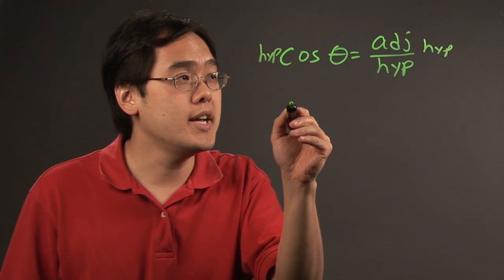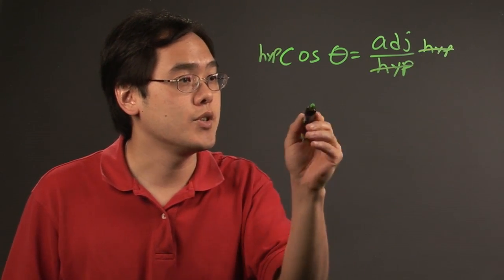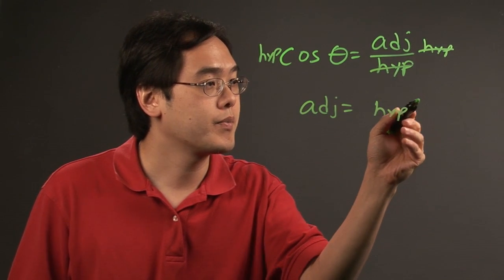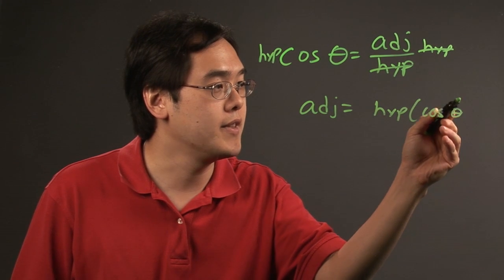So, the idea here is the hypotenuses cancel, so you have the adjacent leg equal to the hypotenuse times the cosine of the angle.